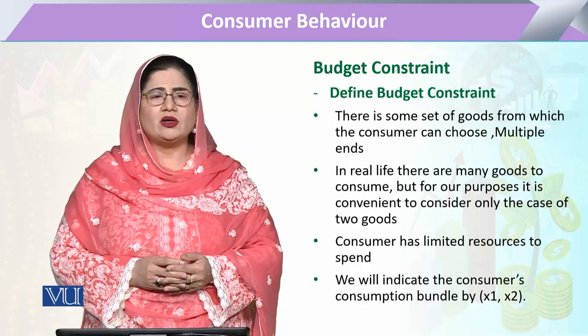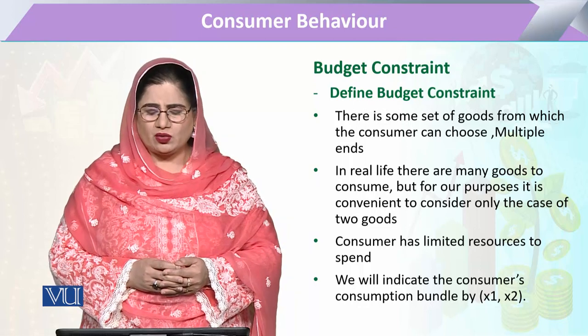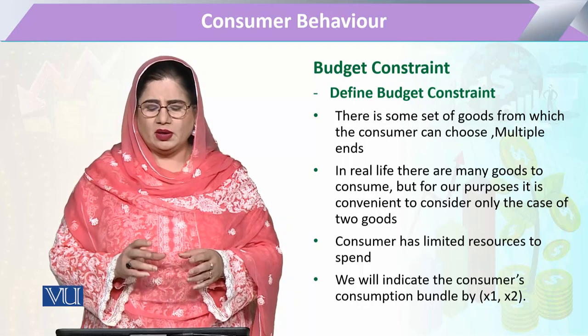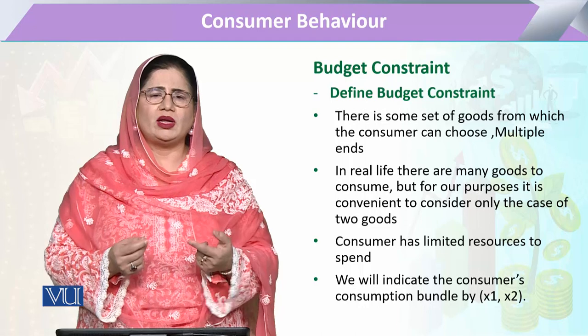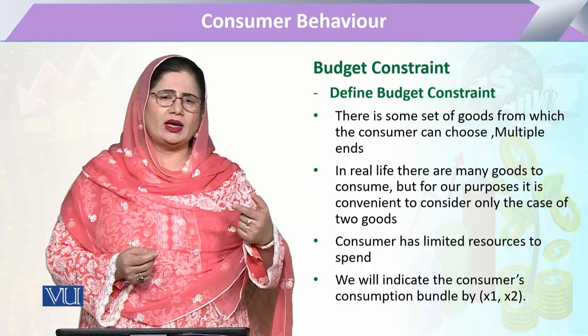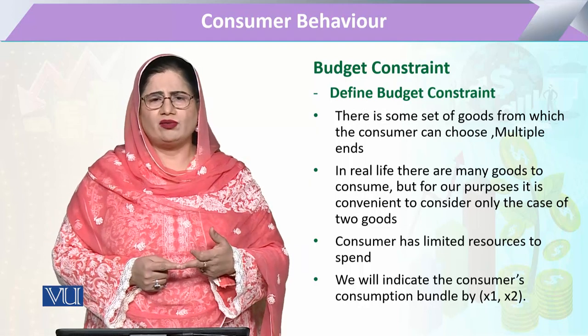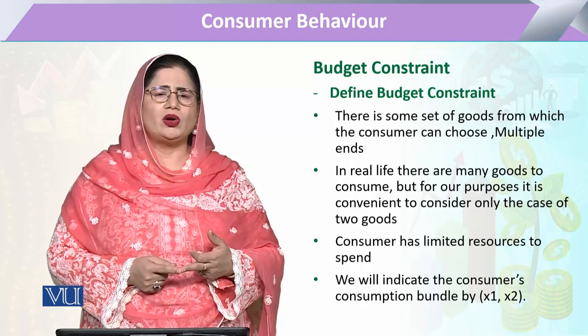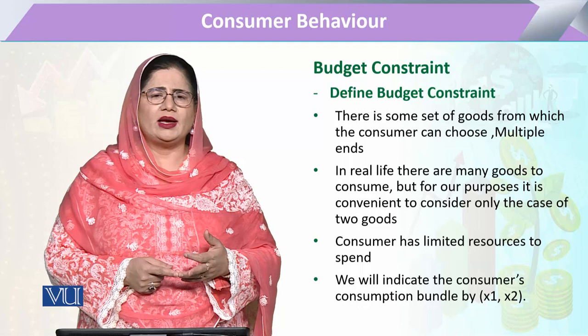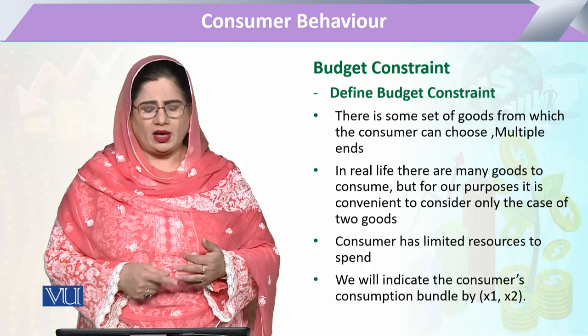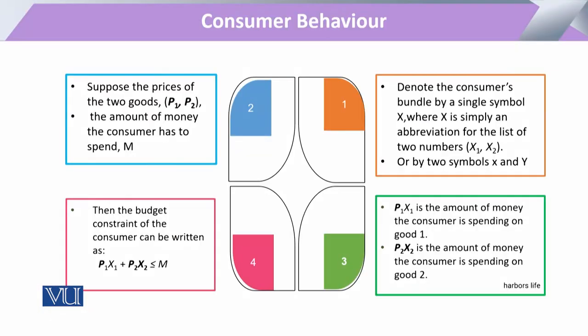If we want to calculate what a budget constraint means, we will look at what is the consumption. The consumption of a commodity bundle — again, X1 and X2 — when we purchase something, there is an amount of money involved.